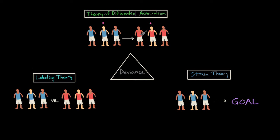Another view of deviance that's supported by the symbolic interactionist perspective of sociology is labeling theory. In labeling theory, a behavior is deviant if people have judged the behavior and labeled it as deviant.